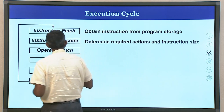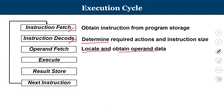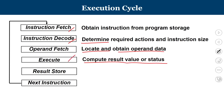After decoding, we move to operand fetch. In the decode step we identify what the operands are; now we locate them and bring those operands into the processor to carry out the task. Then we compute the operation in the execution stage. Once execution is over, the result must be saved — either in memory or in a register. Depositing the result in storage for later use is known as result storage.